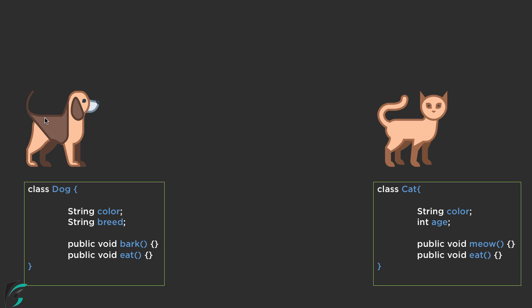Both are actually animals. We humans are also animals, but as of now let's compare cat and dog. So both are animals, and if they are animals they must have some properties in common — such as here we have color and here as well we have color. In case of methods, we have the eat method in both classes. So both dog and cat are actually animals and have some common properties. Don't you think these two properties — color and eat — are repeated in both classes?